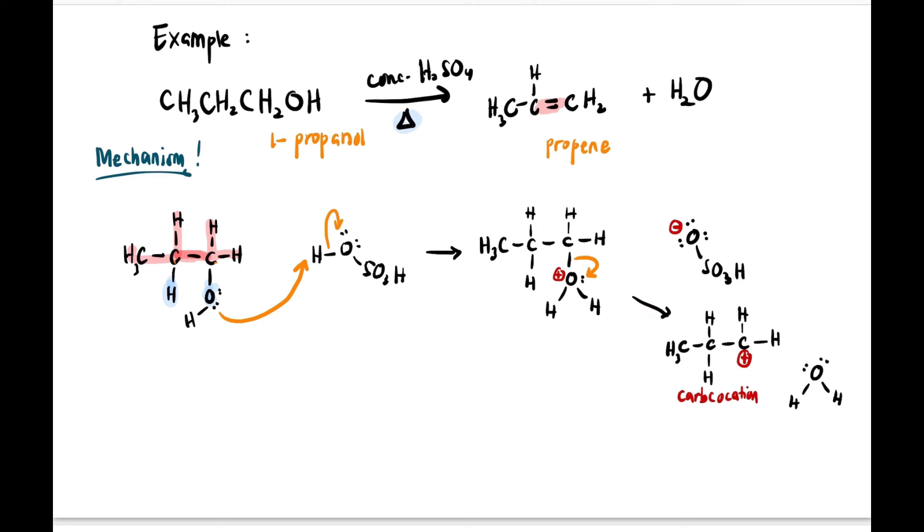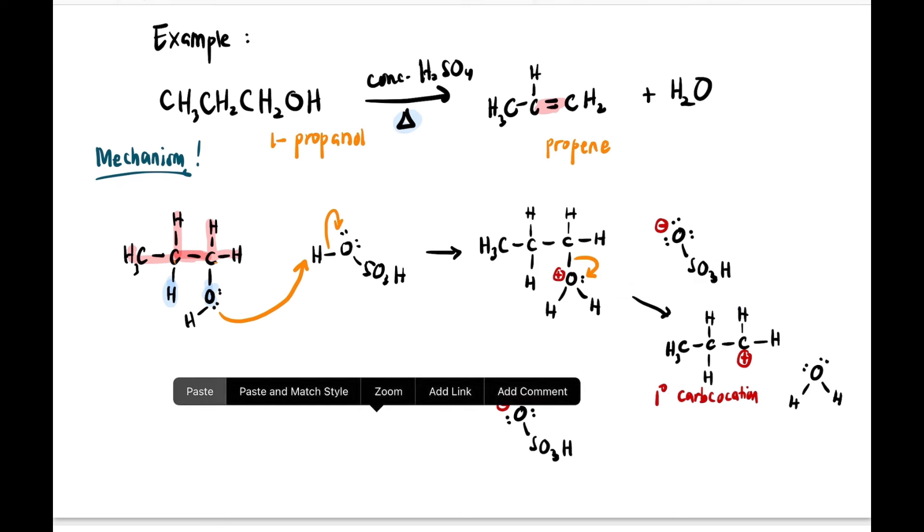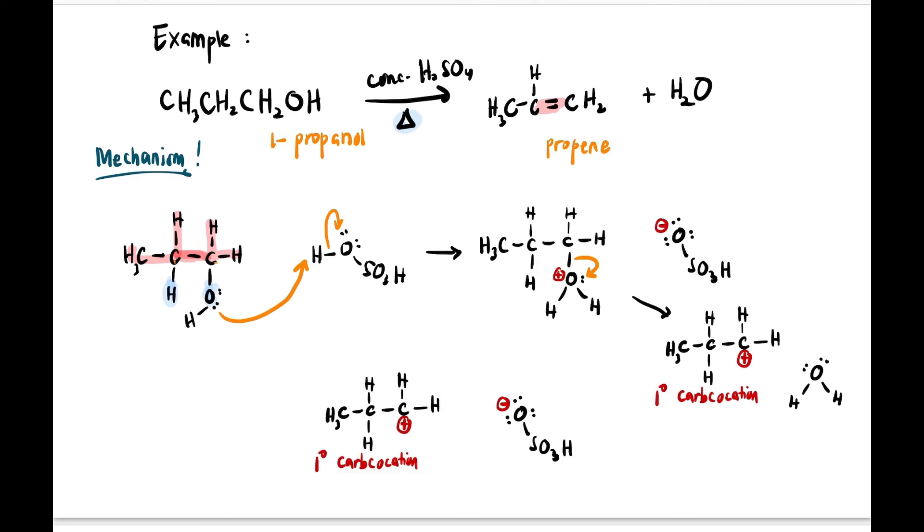Now we continue. The OSO3H minus will get back to the carbocation to complete this reaction. What will it do? It will attack this carbocation, but not directly at the plus, because if we attack directly at the plus, we won't get the product we want - we want to get an alkene.